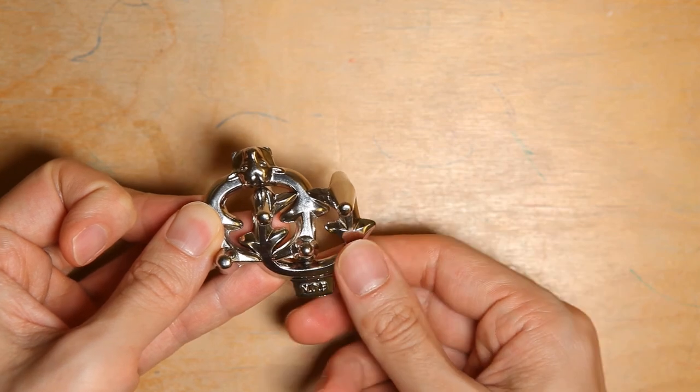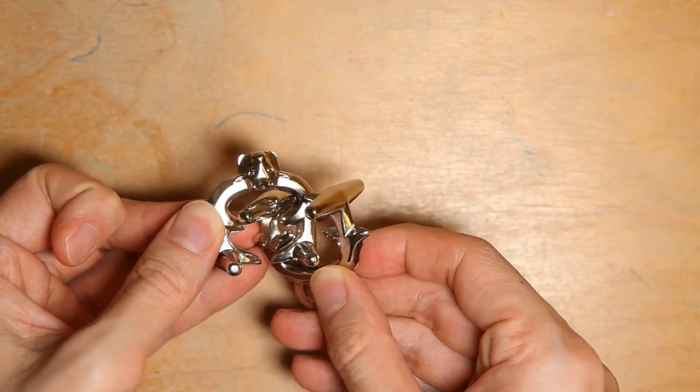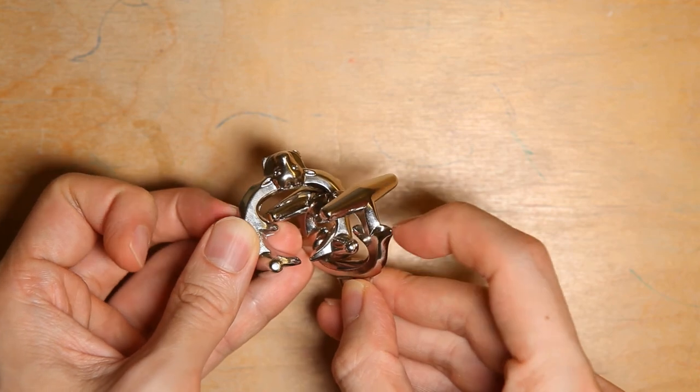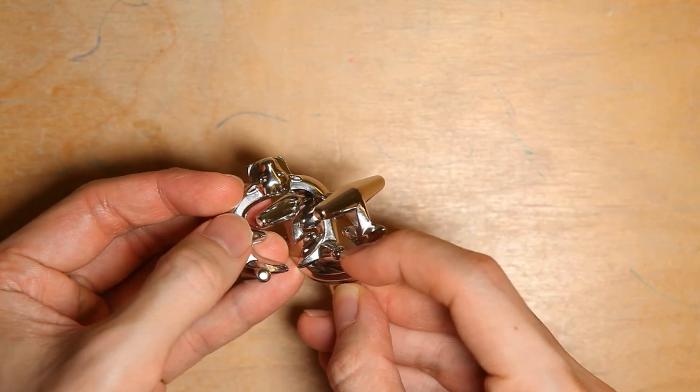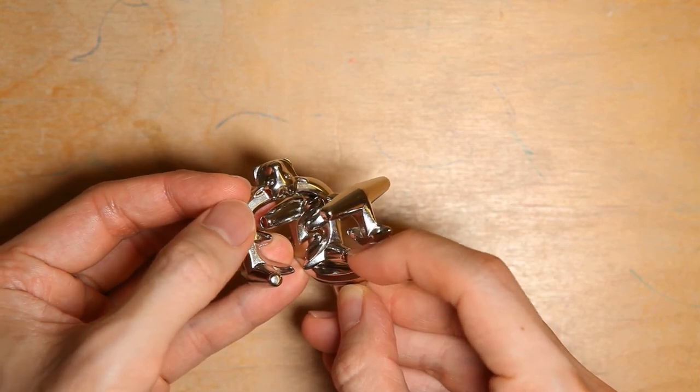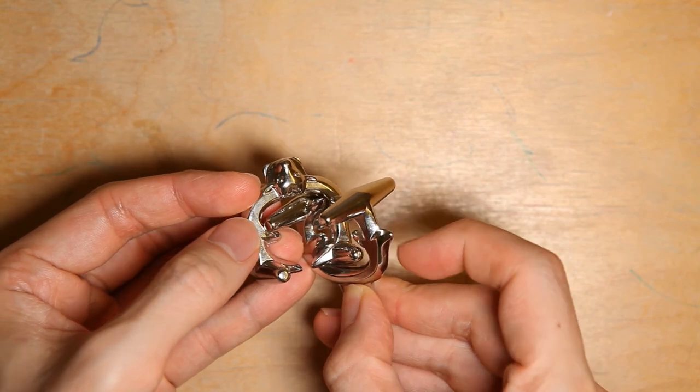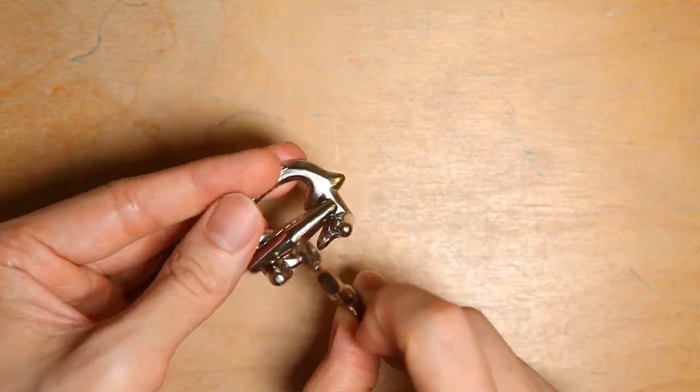Now turn the NOB piece like so and this should clear both the NOB piece and the Hanayama piece here. And you reach this position.